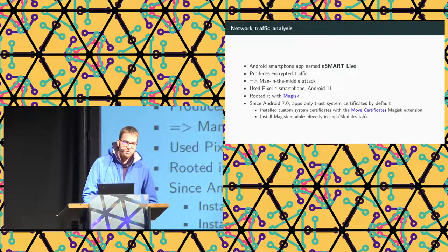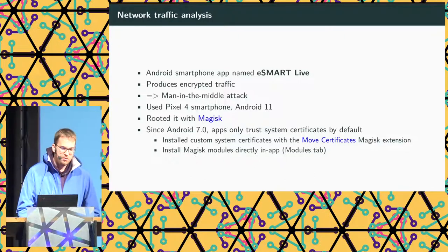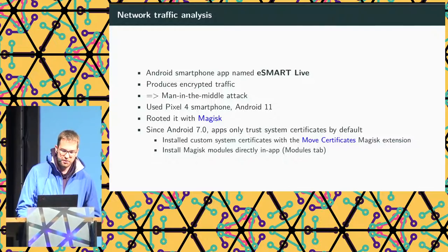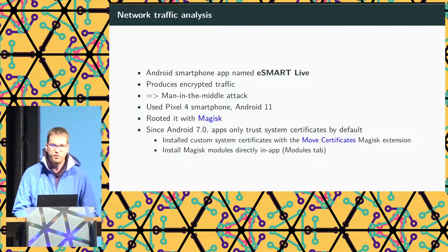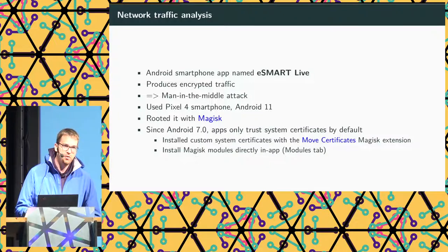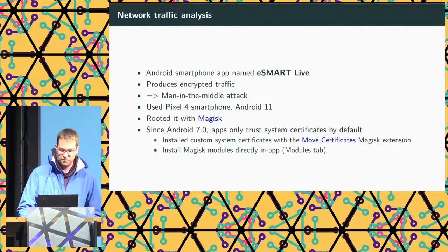I had a look at the Android smartphone app called eSmart Live, and quickly saw that it mostly produces encrypted traffic. So I decided to do a man-in-the-middle attack. I used a Pixel 4 smartphone running Android 11, rooted it with Magisk. Since Android 7, apps only trust system-wide certificates, so I used the Move Certificates extension from Magisk to move a user cert to a system-wide cert so that it would be trusted by the app.